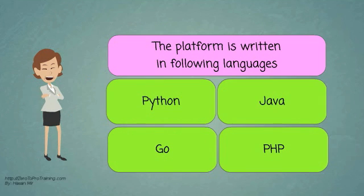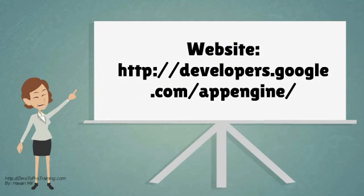The platform is written in the following languages: Python, Java, Go, and PHP. The official website is developers.google.com/appengine.